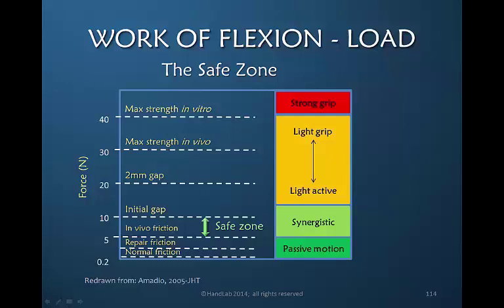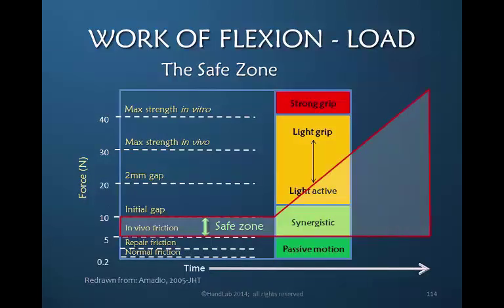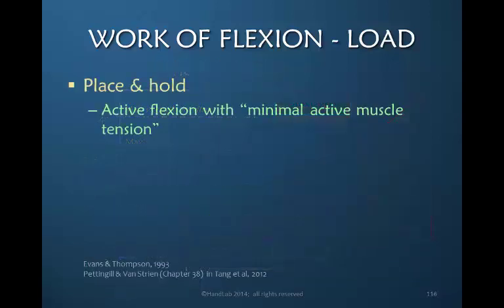Amadio correlated appropriate maneuvers of the tendon in relationship to the safe zone. What is missing, however, is the element of time — as time proceeds and the tendon heals and grows stronger, the safe zone significantly increases. The safe zone can also be altered by multiple factors, one of which is the strength of the suture. Place and hold is a technique frequently used by therapists to minimize the tension the muscle needs to generate to pull the finger into flexion; it is important that passive range of motion precedes the place and hold so that the resistance to holding is minimized.